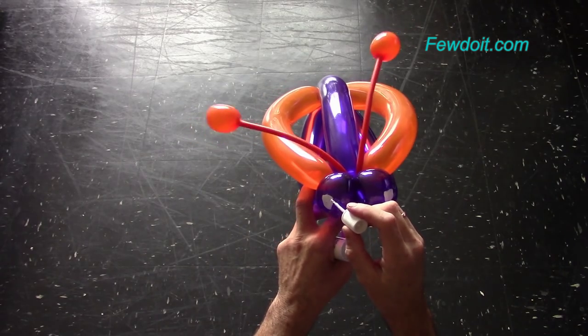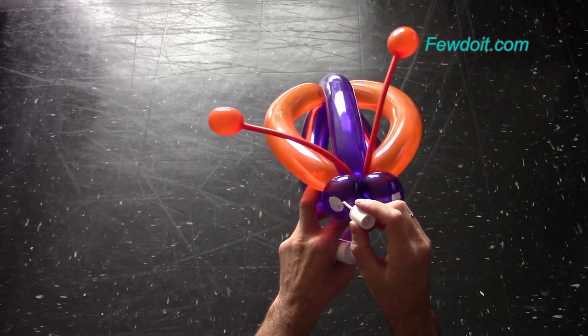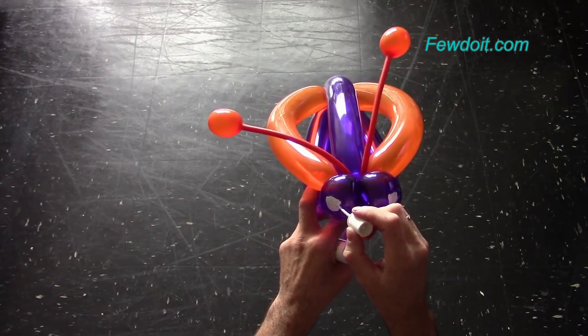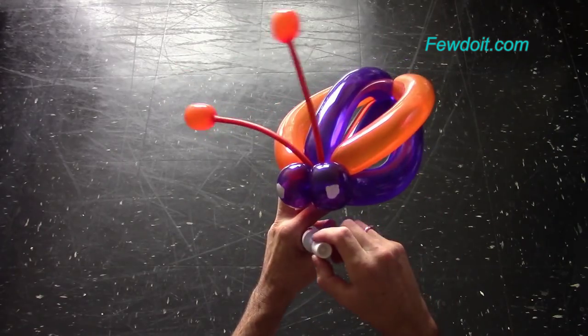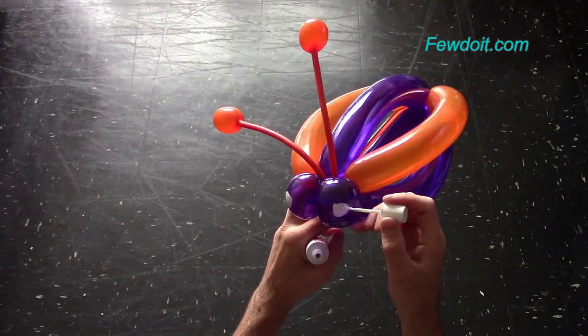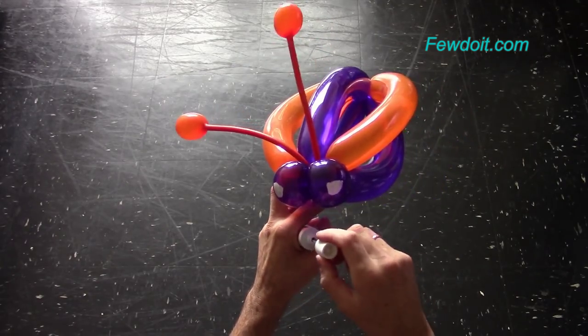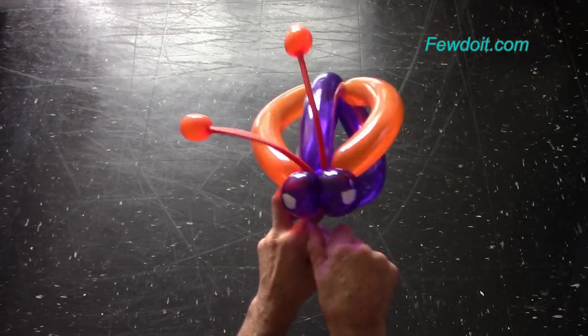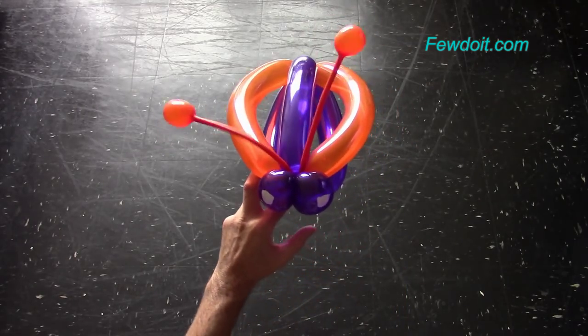As a matter of fact, I'm going to use a permanent black marker to draw some spots on the orange balloon to make it look as a lady Bach. It is Halloween season coming, and of course we can use Halloween color balloons to make all kind of bloodsuckers.